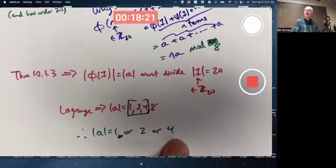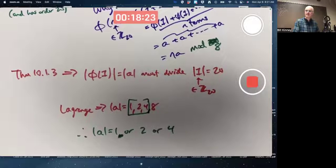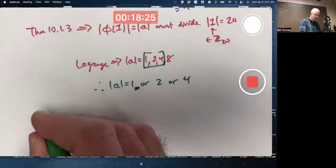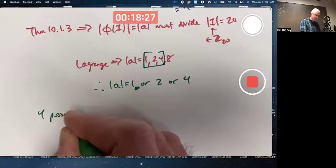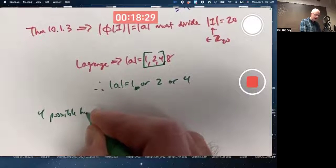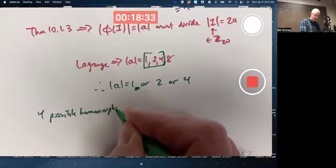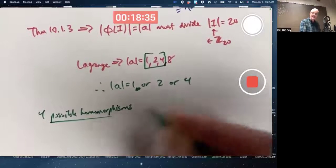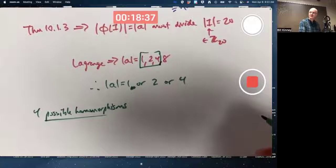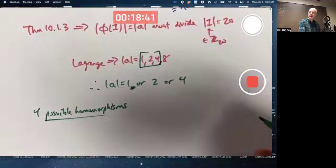A has order four. There are two possibilities. So altogether, yes, three numbers there, but four possible homomorphisms. None of which are onto because A does not have order eight. So there's no onto homomorphisms from Z20 to Z8.